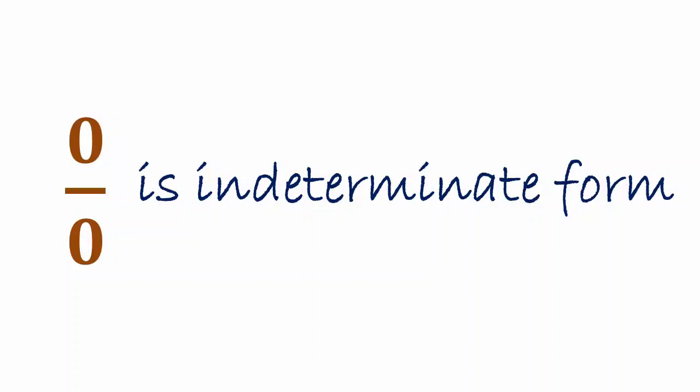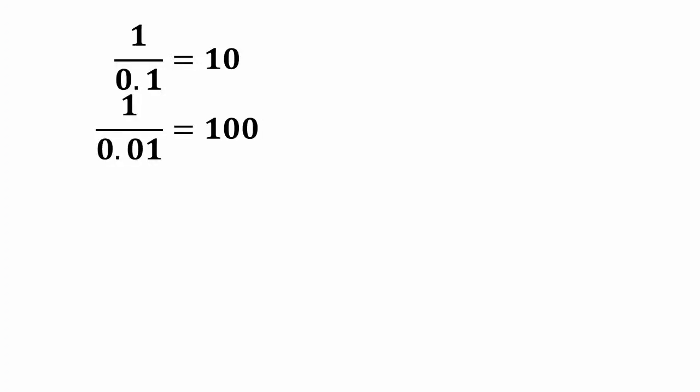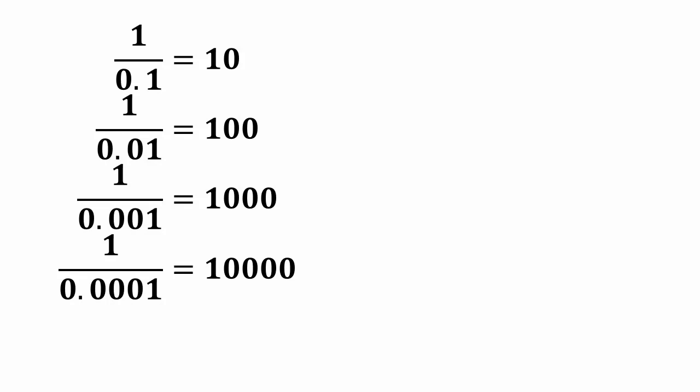We are going to use another approach here which is the limiting approach. Suppose if we take 1 over 0.1 that is equal to 10, and we are approaching to 0 from the right side. So 1 over 0.01 is 100, 1 over 0.001 is 1000, and 1 over 0.0001 is 10,000. So if we approach to 0 from the right side it goes to plus infinity.